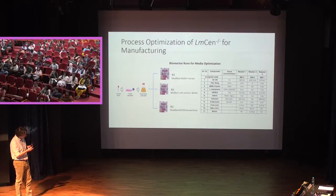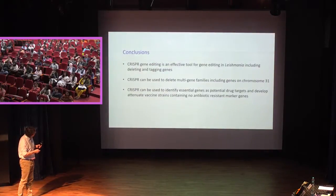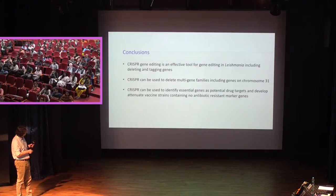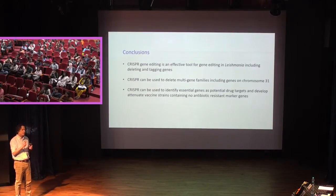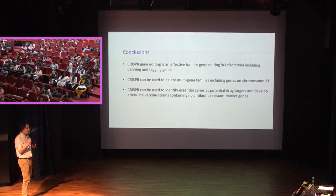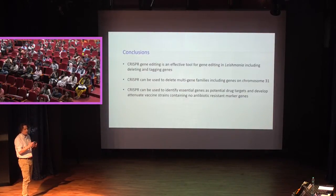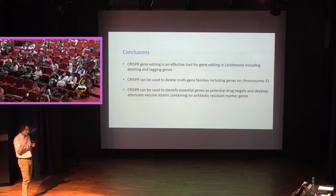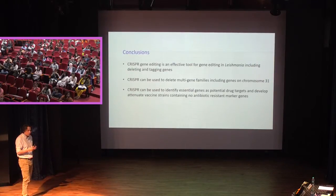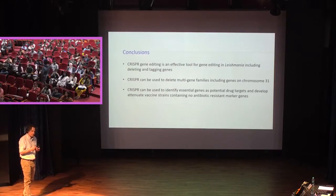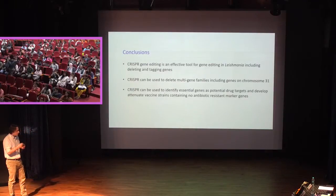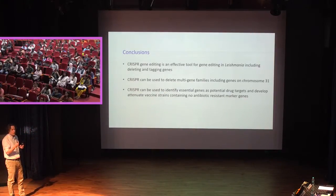The CRISPR system is really an incredible way of modifying the leishmania genome in ways that we have not been able to do before. You can delete large gene families — or even chromosome 31, where there are four copies — and multi-family genes within the genome, which wasn't possible before. You could use this to identify potential drug targets and for the development of attenuated strains which, since they don't have antibiotic resistant markers, can be advanced into human trials.